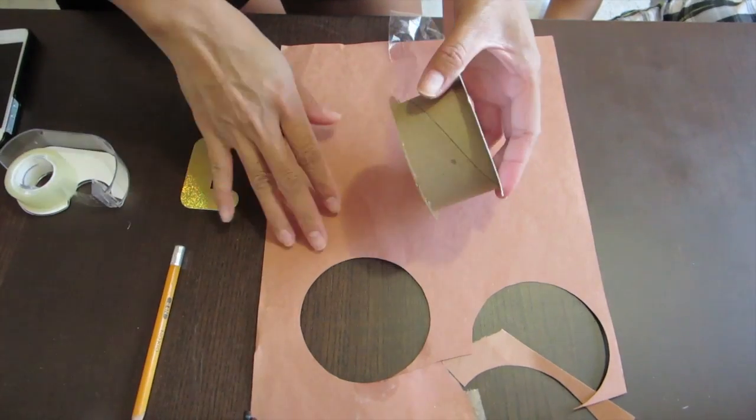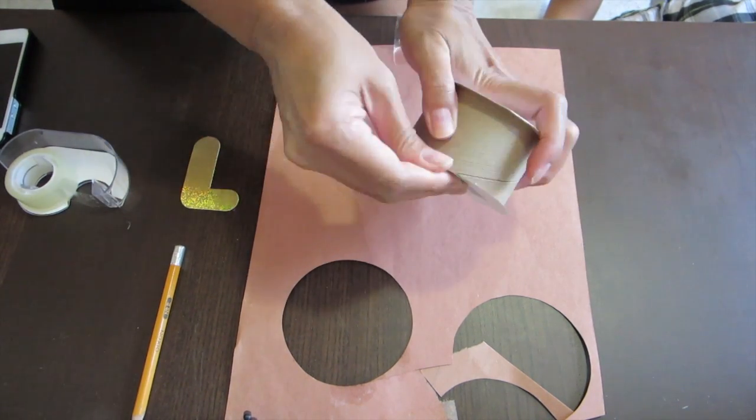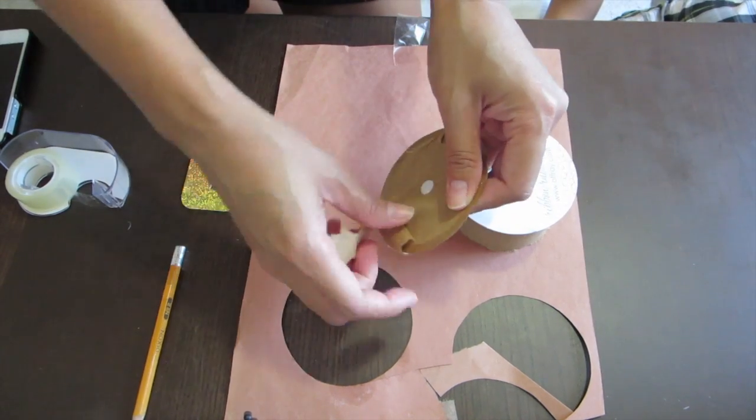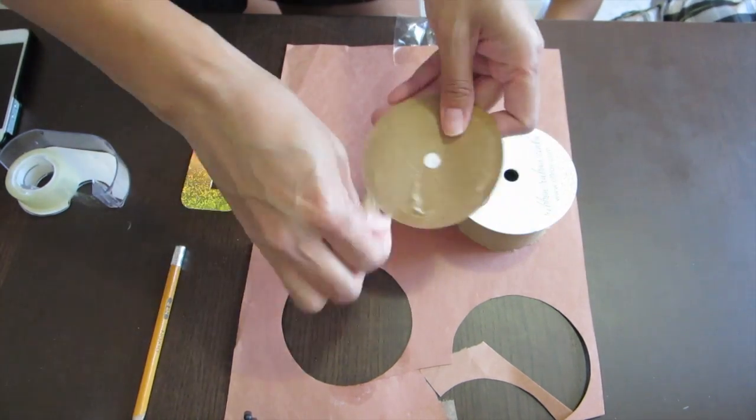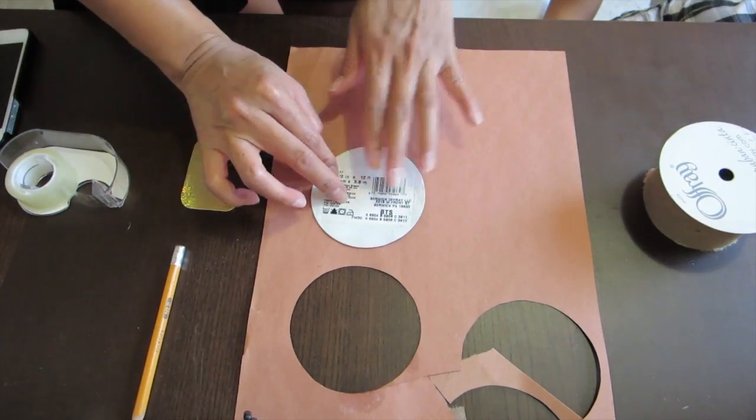For our belt buckle, I'm just tearing off this little circle thingy that comes with the ribbon holder, I think that's what it's called. So just trace that on a brown paper and we're gonna tape that up.